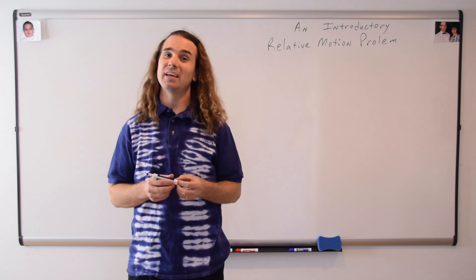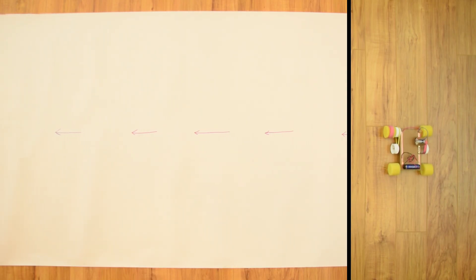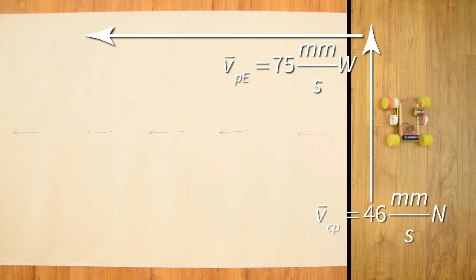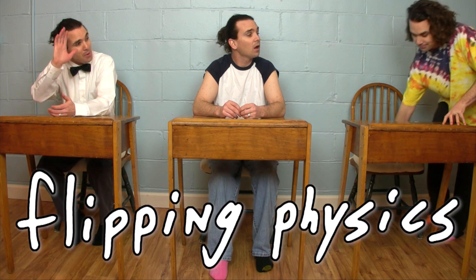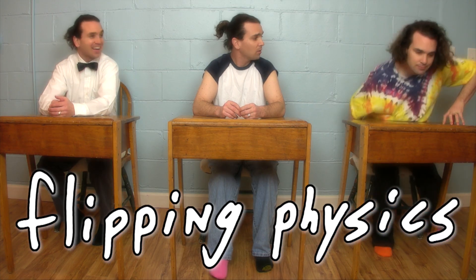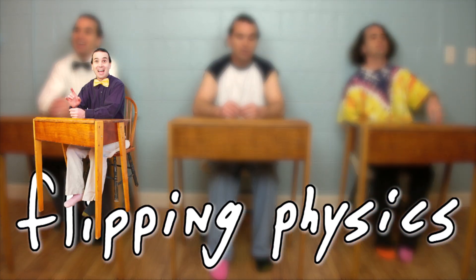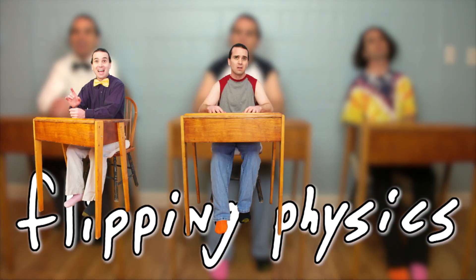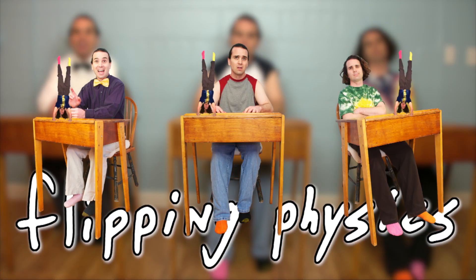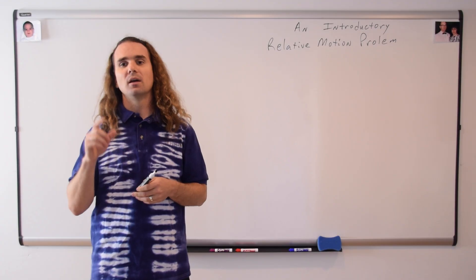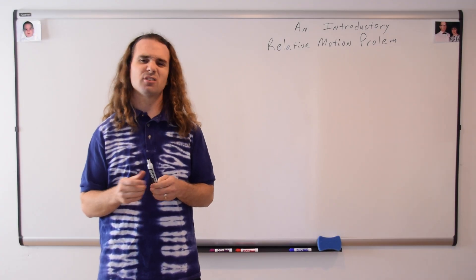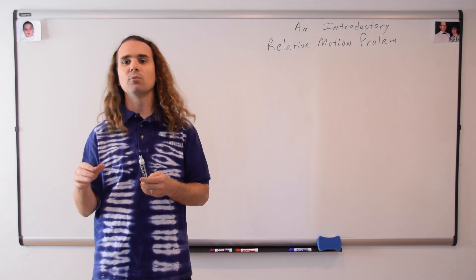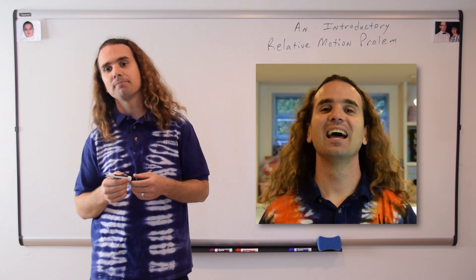Good morning. Today we are going to use a toy car and a large piece of paper to do an introductory relative motion problem. Hey guys. Flippin' Physics. Bobby, could you please read the problem just through part A? We'll get to parts B and C later today.